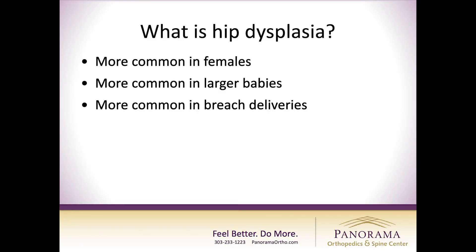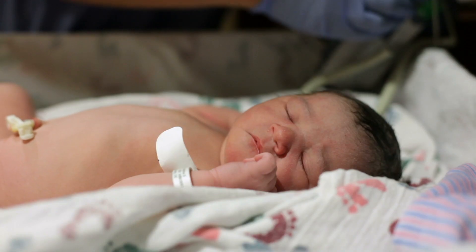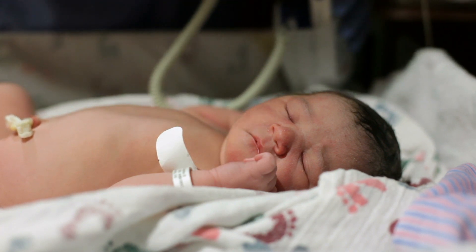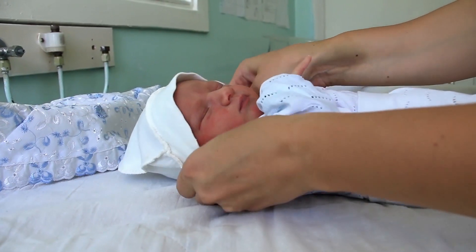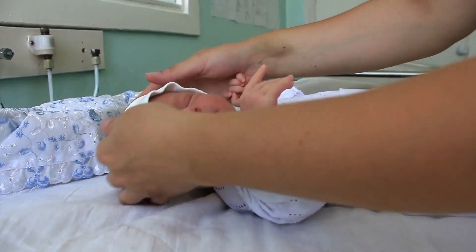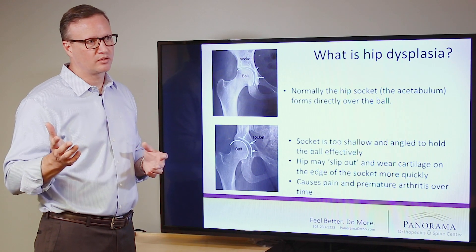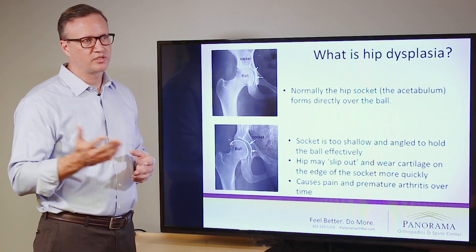It's more common in females, in larger babies, and in babies that are breech delivery, but when they're born their socket is not covering the ball. That means the hip can pop out of the joint more easily. It's usually screened for in the nursery after birth and the pediatrician can find and correct it without surgery. However, a small percentage of people make it through to adulthood with hips that aren't completely formed and eventually develop pain.